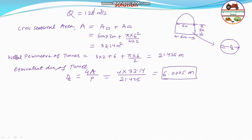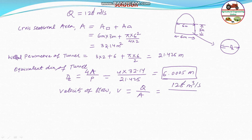Now, using the Darcy-Weisbach equation, we need to know the velocity of flow. Velocity V equals Q divided by the cross-sectional area A. Q is 128 cubic meters per second and A is 32.14 square meters. Therefore, the velocity of flow equals 3.983 meters per second.